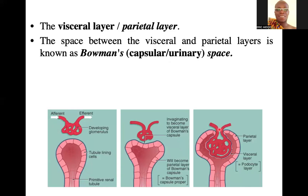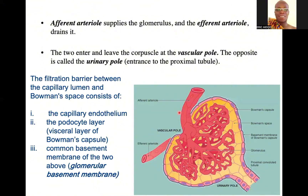We call it the vascular pole because the afferent and efferent arterioles are concentrated there. The urine is usually collected at the opposite portion, which is why we call it the urinary pole. The afferent arteriole supplies the glomerulus and the efferent arteriole drains it, and the two enter and leave the corpuscle at the vascular pole.